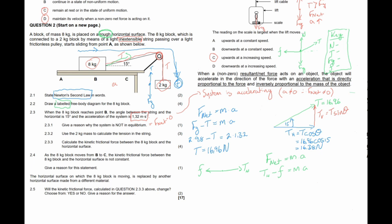Substituting: 16.38 N minus the unknown frictional force equals 8 kg multiplied by 1.32 m/s². This gives a friction force of 5.82 newtons. It is important to note that kinetic frictional force is a vector and must therefore include direction — in this case, to the left.